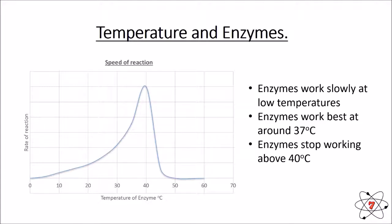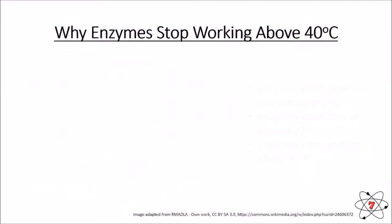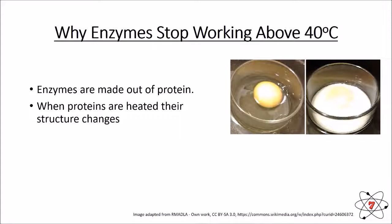You might wonder why the reaction doesn't continue to get faster above 40 degrees. It's important to note that enzymes are made out of protein. A good example of something made out of protein is an egg white. When you heat an egg white, it goes from colourless and liquidy to white and solid. When proteins are heated, their structure changes, and this process is irreversible — we cannot uncook an egg.